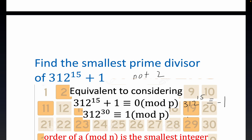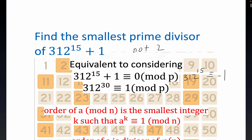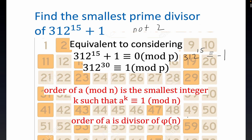Let's briefly define order: it's the smallest integer k such that a to the k is congruent to 1 mod n. This is important because if an exponential power is congruent to 1, that's a computation-reducing mechanism. Another key result: the order of any element divides phi of that element, where phi counts the values less than n that are relatively prime to n.